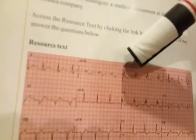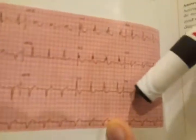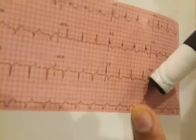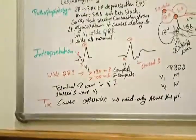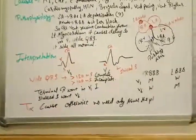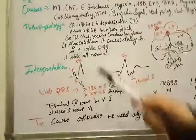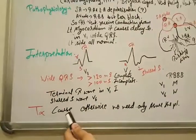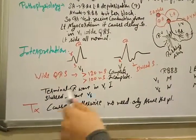See, M pattern here in V1. And V6, we see W pattern. This is W on ECG. So this is right bundle branch block as explained in the book. You can solve any questions from this now.